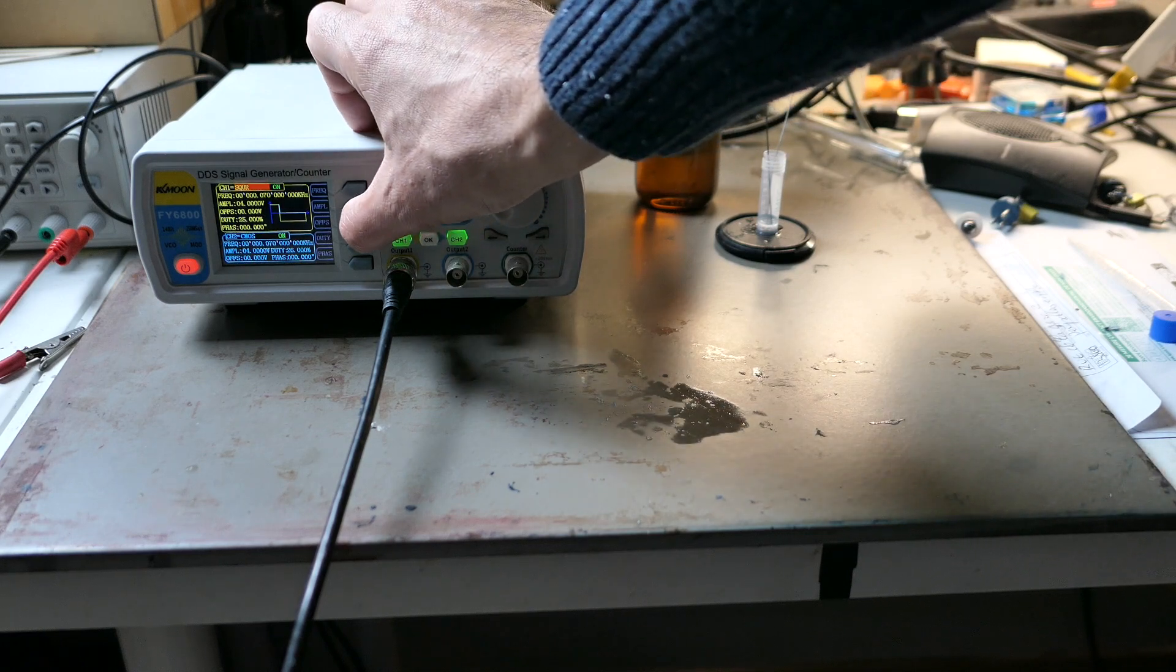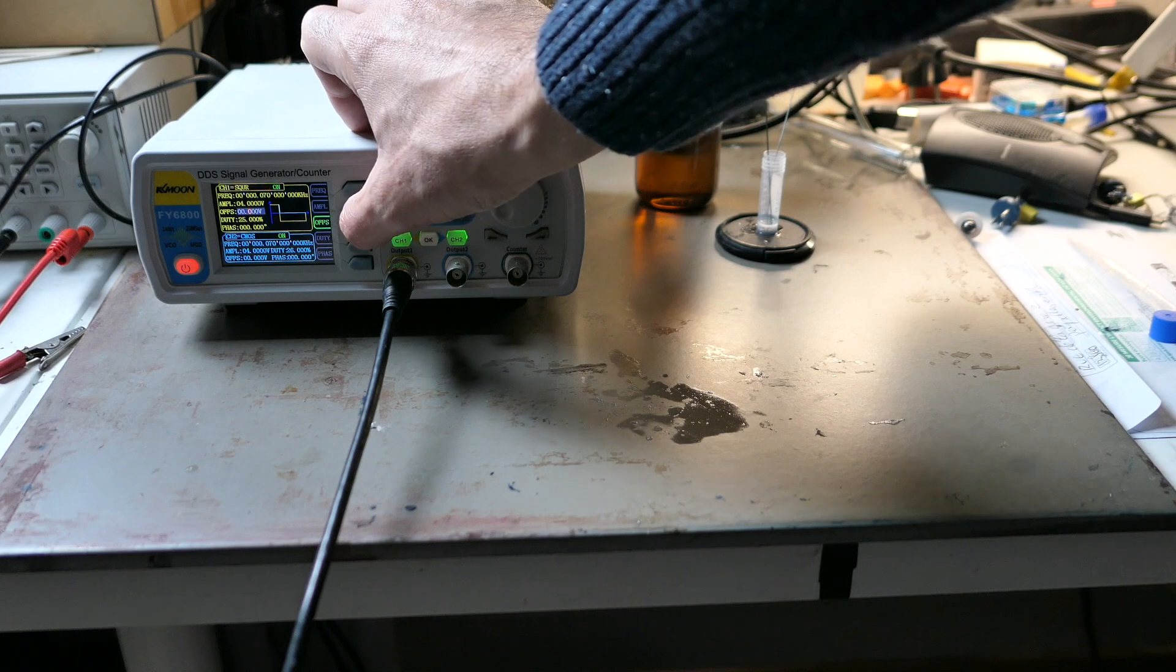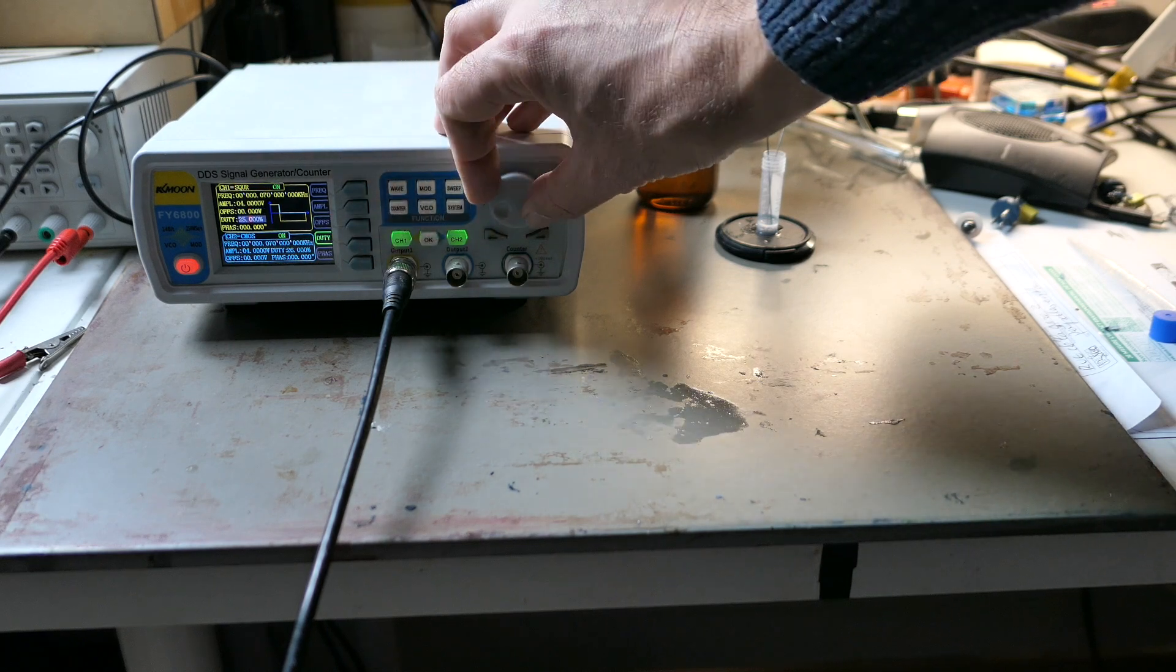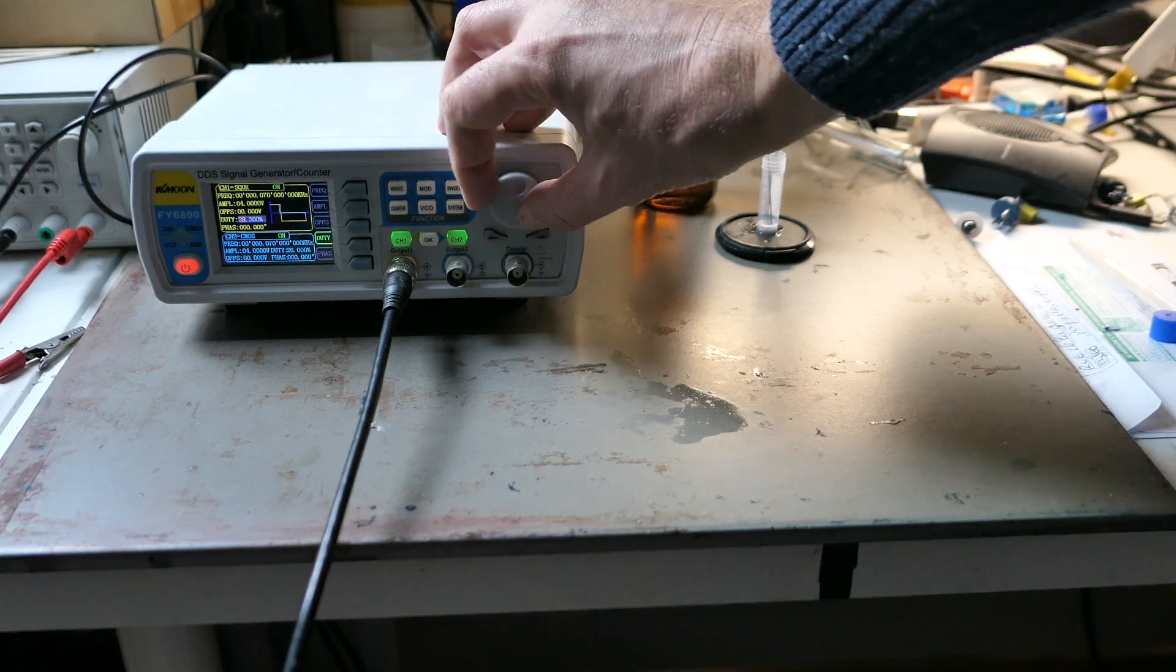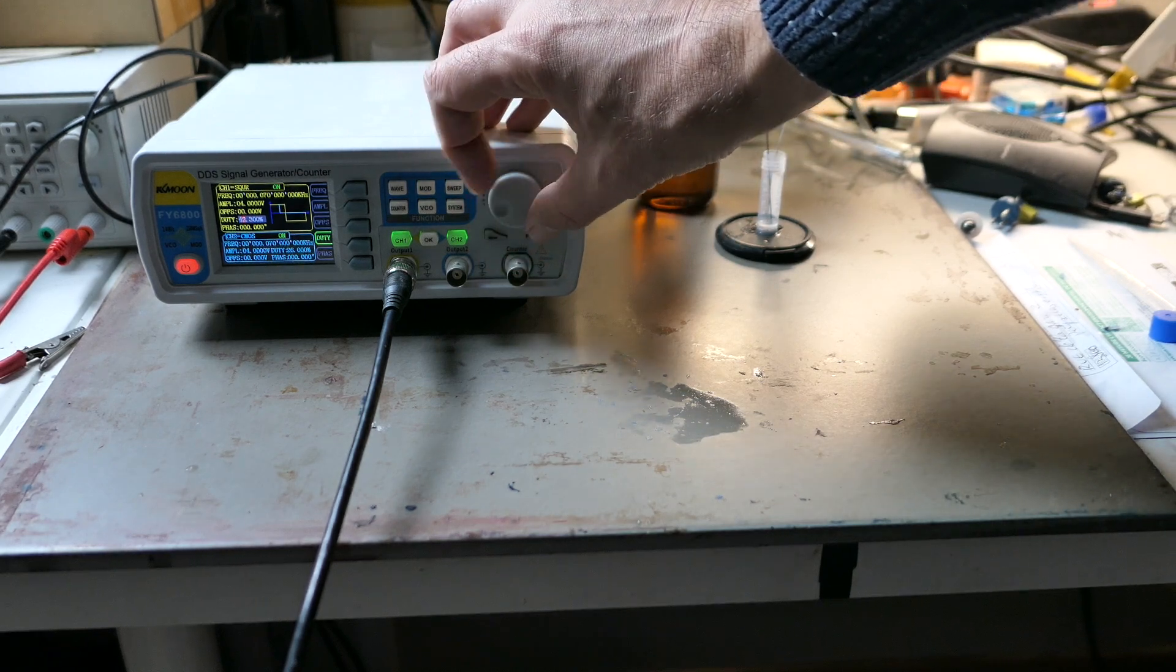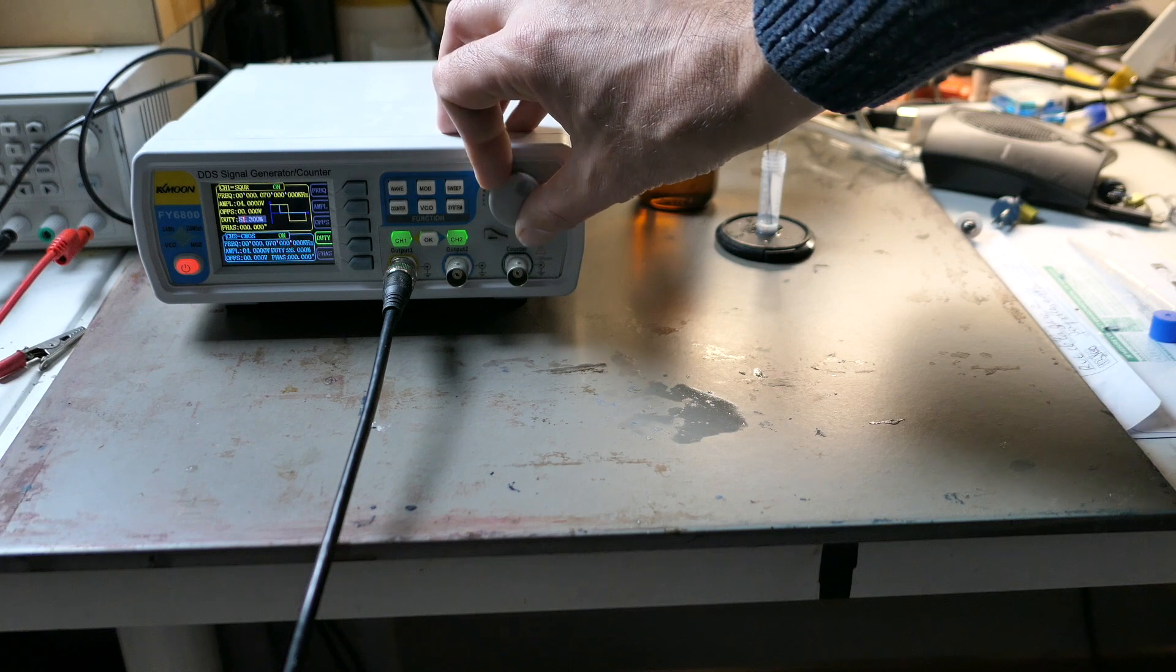However, these studies suggest that adding a small DC offset voltage to the signal can help the process. Now I'm setting up the entire system. The electrolysis will take place in a very small container.